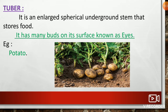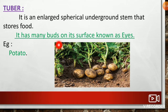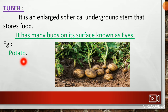Tuber: It is an enlarged spherical underground stem that stores food. It has many buds on its surface known as eyes. Potato is the best example of a tuber.